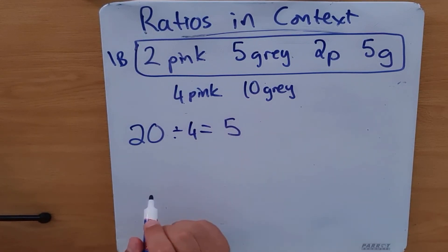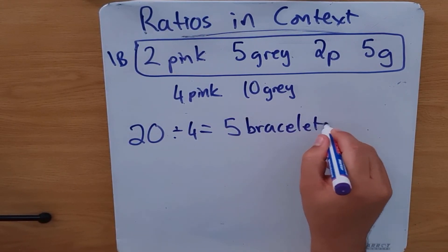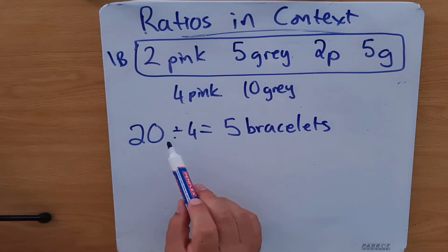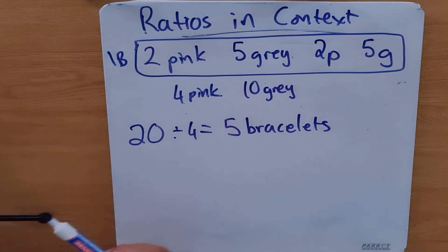That will give us five, and that's going to tell us how many bracelets we can make. Because remember, for every bracelet she makes, she needs four pink beads. Then they ask, how many gray beads will she now need?